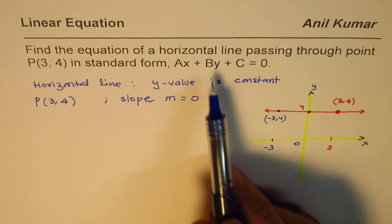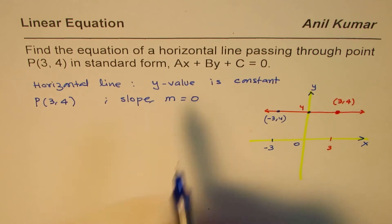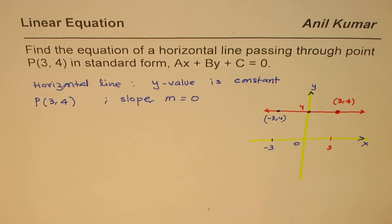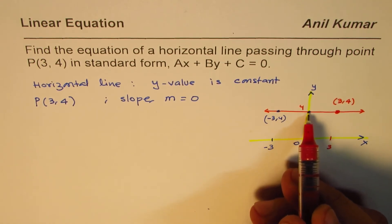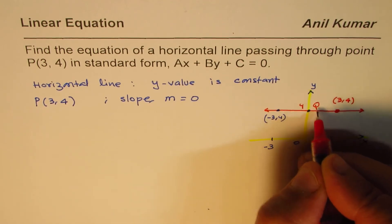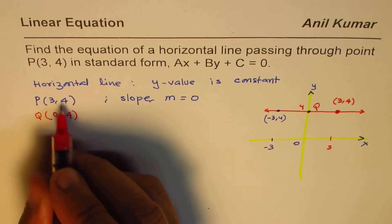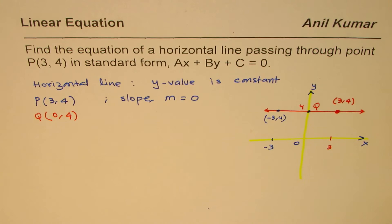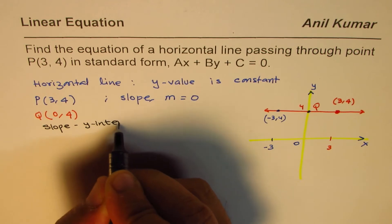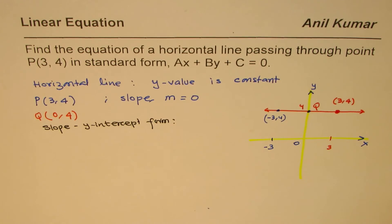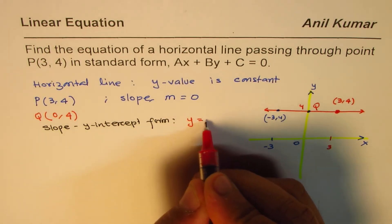We need to find the equation in standard form. Since we are given the slope and a point, we can assume another point — the y-intercept — which is (0,4) for this horizontal line. We can call this point Q as (0,4) and use two points to find the equation. But I'll prefer to write the equation in slope-intercept form, which is y equals mx plus b.